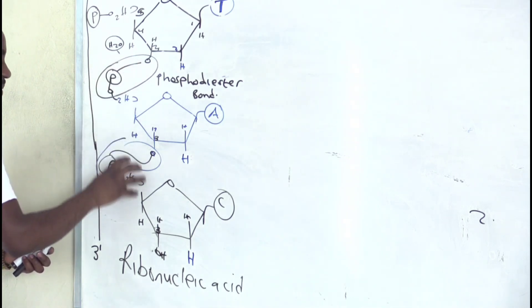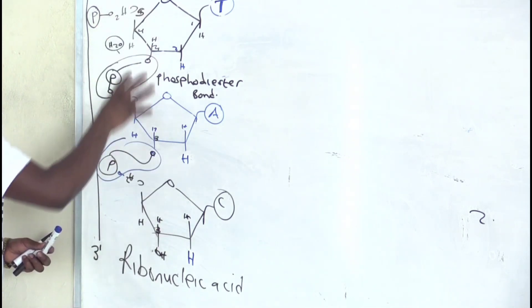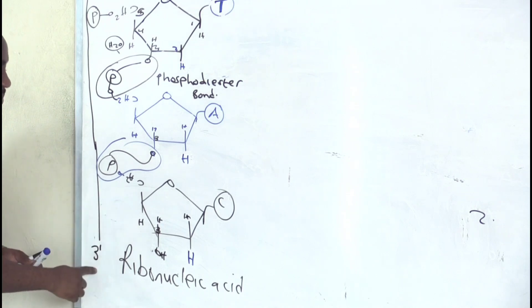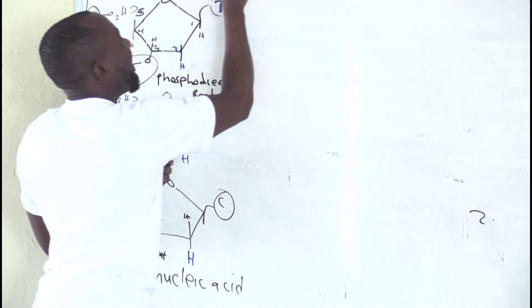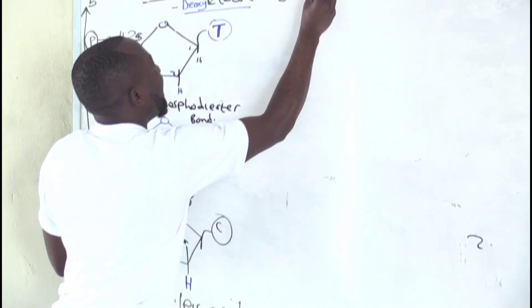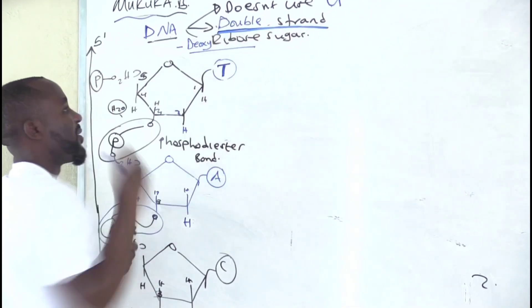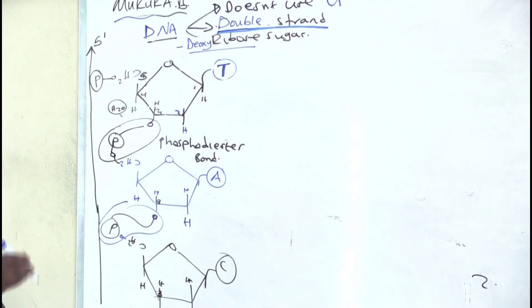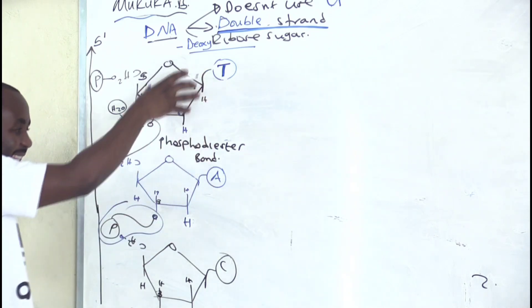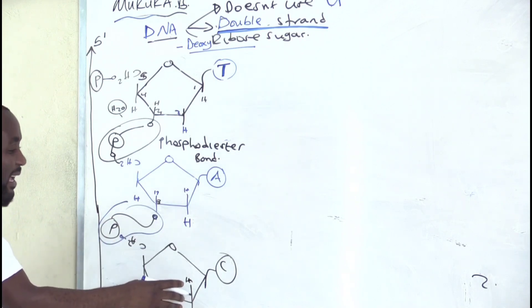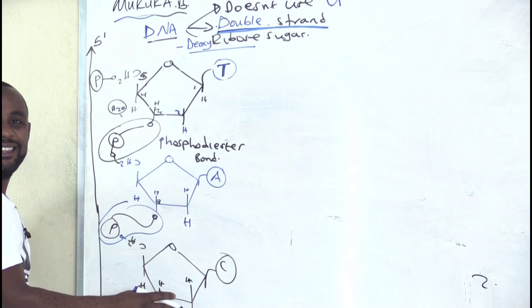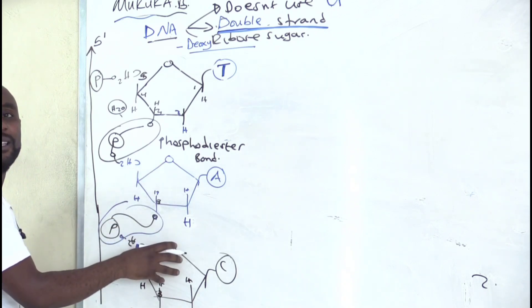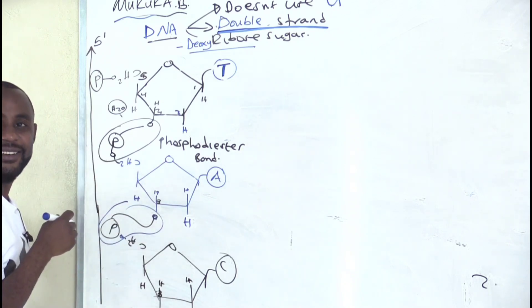The bond is the same, and even the 5-prime and 3-prime orientation is the same. Now the difference is we need to make it double-stranded. DNA is made double-stranded by drawing an opposite, complementary strand facing a different direction.